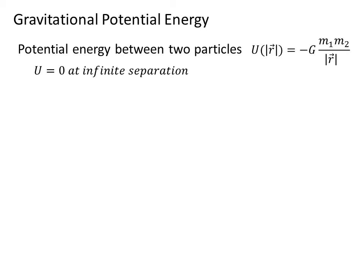We define the zero of the potential energy at infinite separation. So if we are looking at a system of the Earth and a one kilogram mass, we have the Earth, and if the one kilogram mass is at infinity, U is equal to zero.